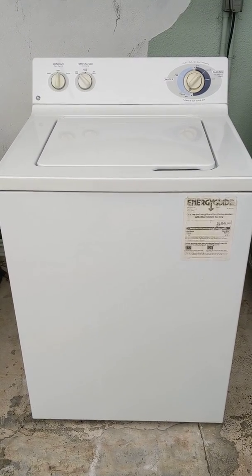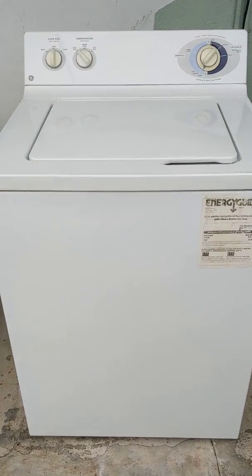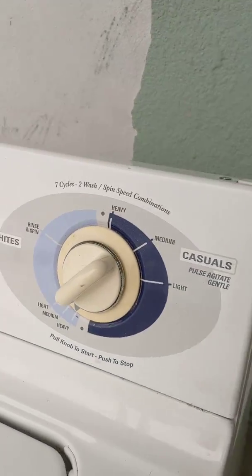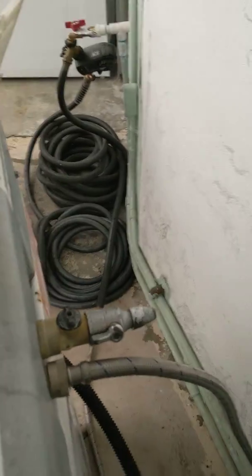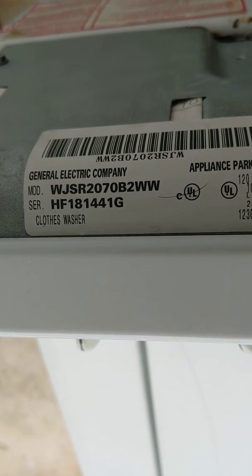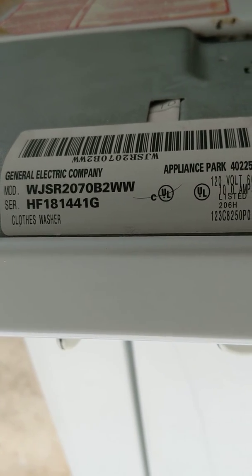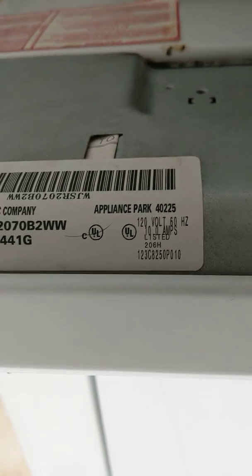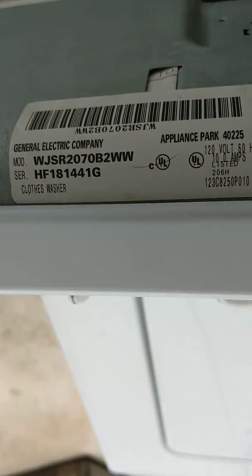This is a demonstration video of the GE top load 7 cycle 2 wash spin speed combination. The model number is WJSR2070B2WW, serial number ending in 441G. I've already got the water filled.